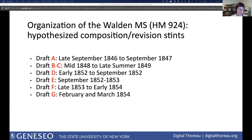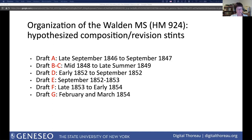The high-res digital images allow for much more flexibility in studying the Walden manuscript while protecting the fragile original leaves. For example, you can download images and order them to show arrangements that may have existed during the composition process. This can help create revision narratives for passages that occur in several drafts. You can also enlarge the images to read text too faint to be deciphered with the naked eye, like insertions in faint pencil.